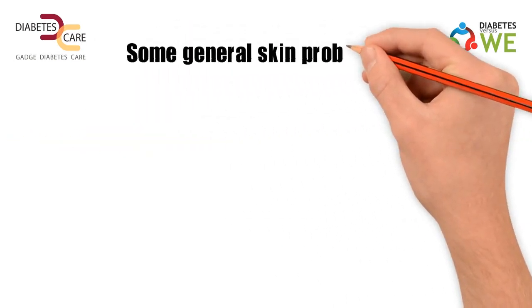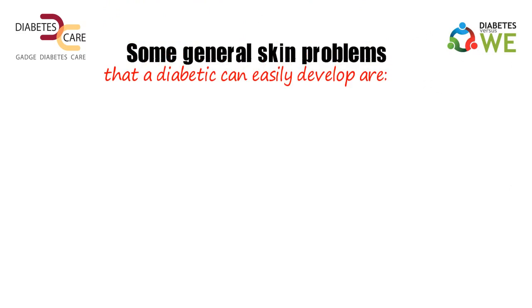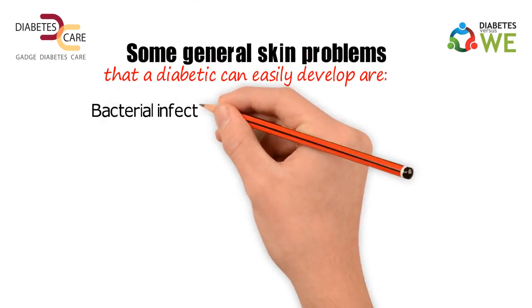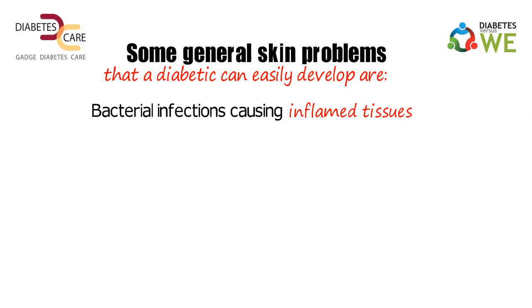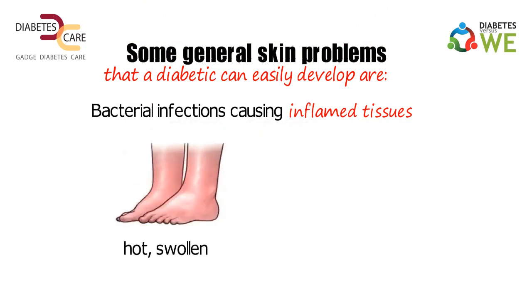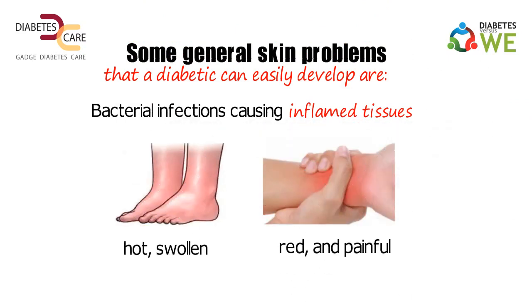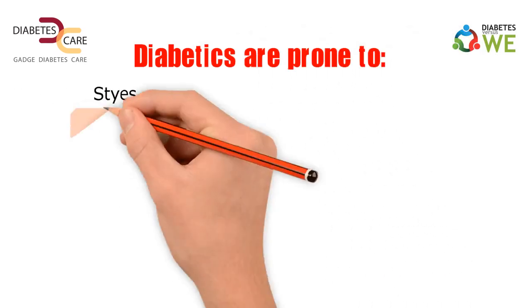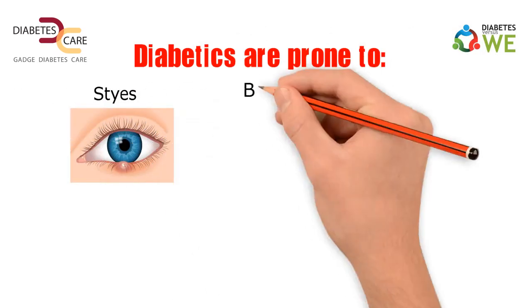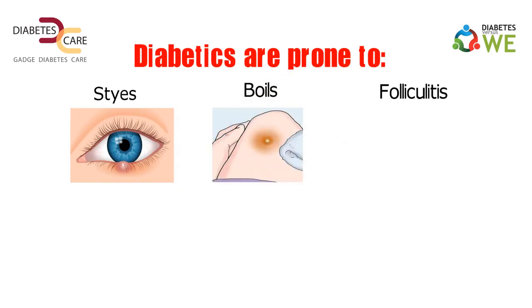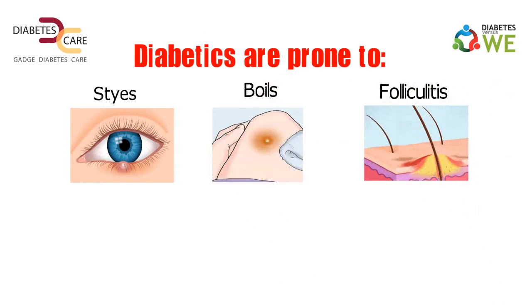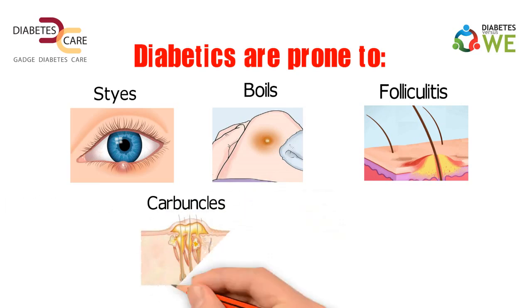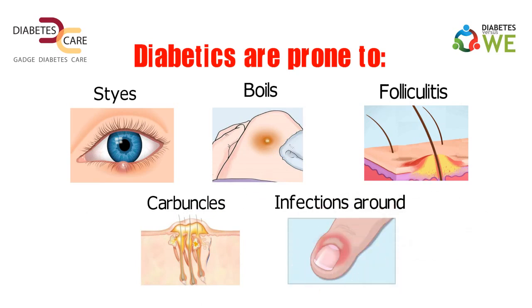Some general skin problems that a diabetic can easily develop are bacterial infections, causing inflamed tissue that are usually hot, swollen, red, and painful. Diabetics are prone to sties — infections of the glands of the eyelid — boils, folliculitis (infection of hair follicles), carbuncles (deep infections of the skin and the tissue underneath), and infections around the nails.